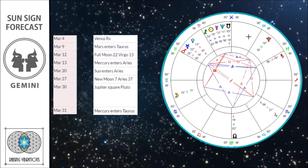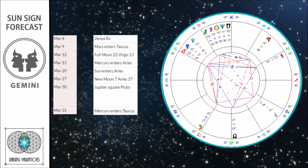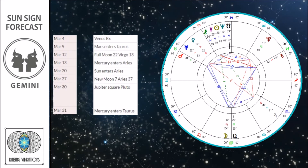Give yourselves a pat on the back. On the 9th of March, Mars enters Taurus and begins to form a grand trine — this is very significant because the overall month for you is focused on Venus, and Pluto and Jupiter, but really Venus.